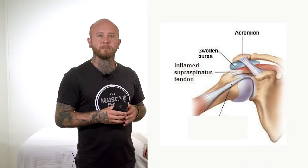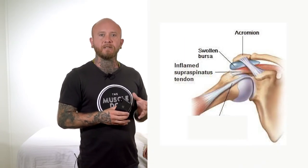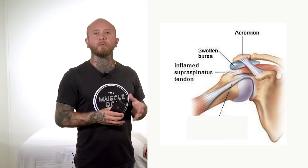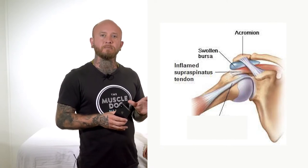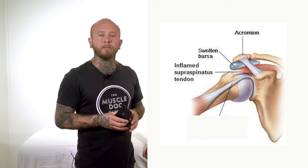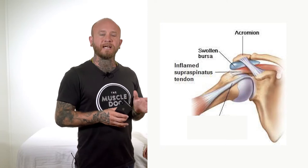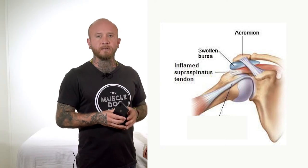Supraspinatus. The supraspinatus tendon is one of the most commonly injured structures of the shoulder. The tendon of the supraspinatus commonly pinges under the subacromial space as it passes between the acromion to attach to the humerus.